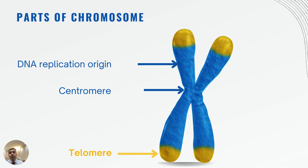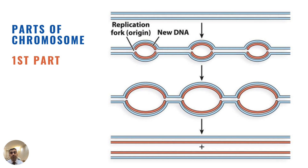Now for the important keyword — the parts of a chromosome. We will focus on three main parts: the first is the replication of origin, the second is the centromere, and the third is the two telomeres.